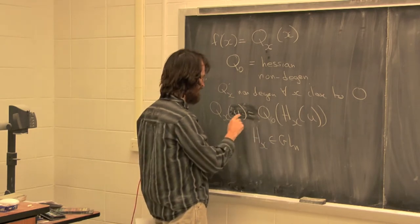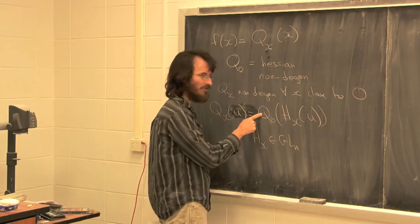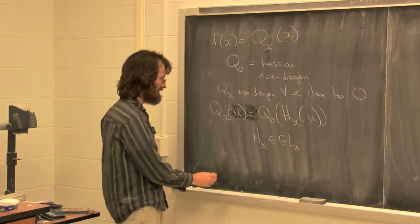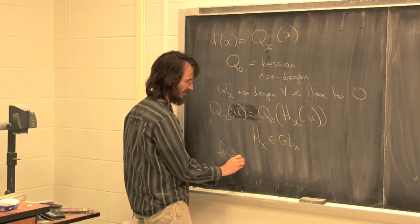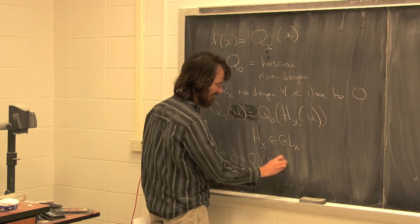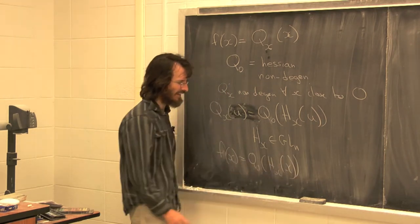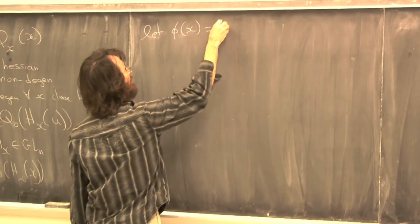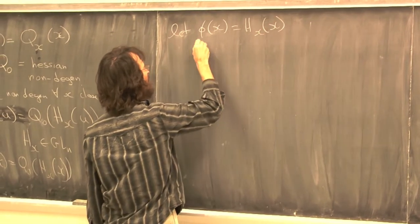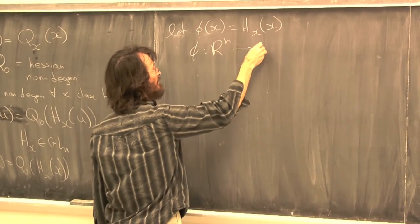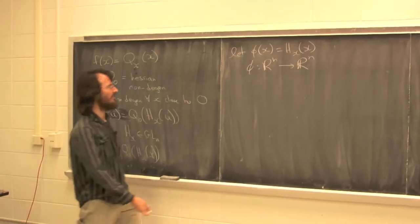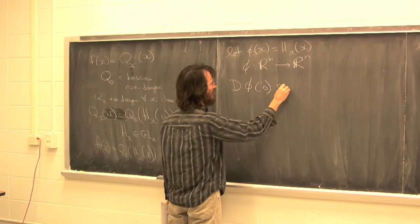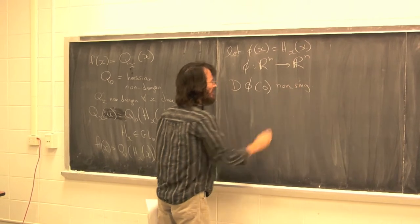If you change your quadratic form a little bit, you can realize that by starting with the fixed quadratic form and pre-composing. So f of x equals q_0 of h_x of x. Then h_x of x is a map from R^n to R^n, from a neighborhood of the origin to a neighborhood of the origin, and that's a local diffeomorphism. To compute that, just compute the derivative at the origin and verify it's non-singular.